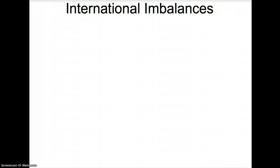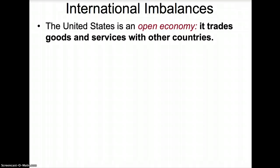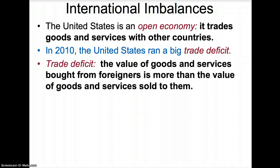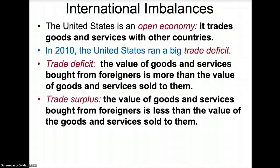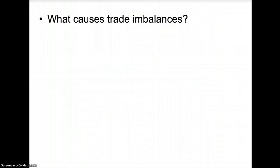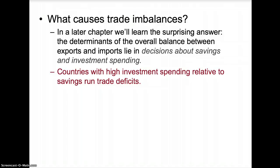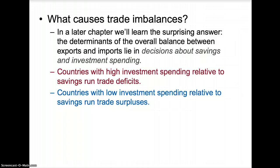International trade balances: the United States is an open economy, meaning it trades goods and services with other countries. In 2010, the United States ran a large trade deficit. A trade deficit occurs when exports are less than imports, or when the value of goods and services sold to foreigners is less than what is bought from them. A trade surplus is when exports are more than imports. The determinants of the overall trade balance lie in decisions about savings and investment: countries with high investment spending relative to savings run trade deficits, while countries with low investment spending relative to savings run trade surpluses.